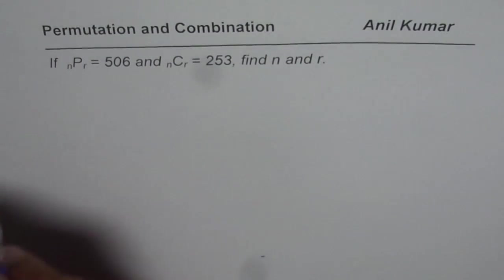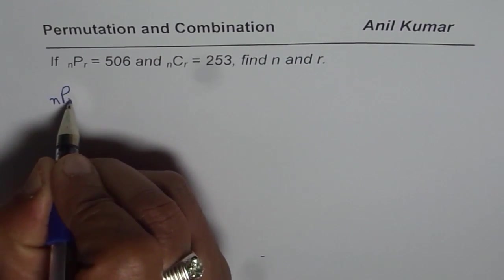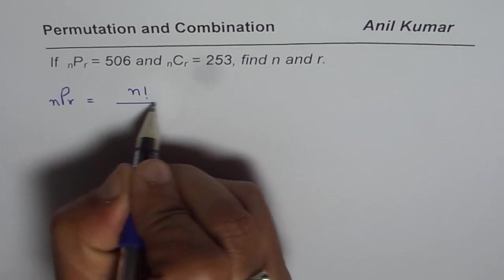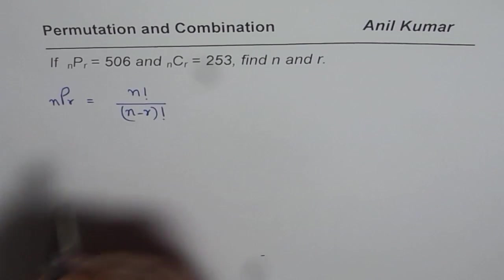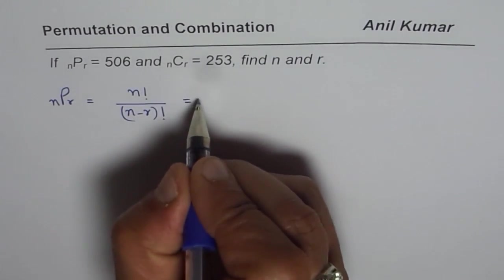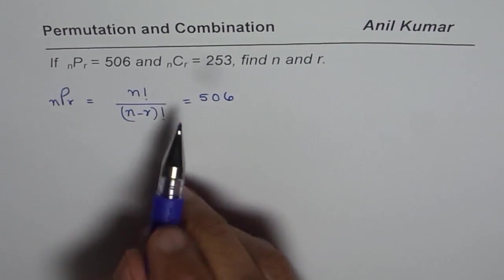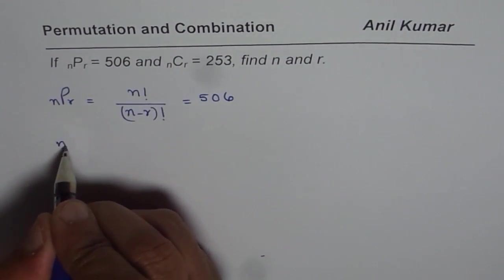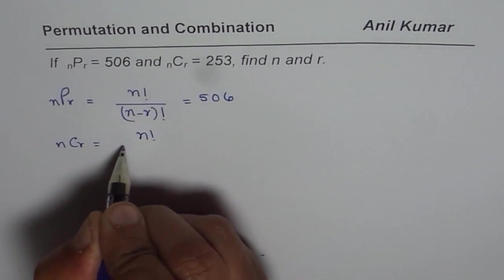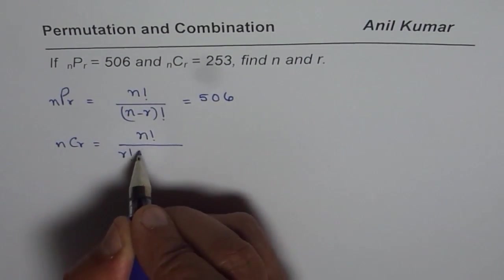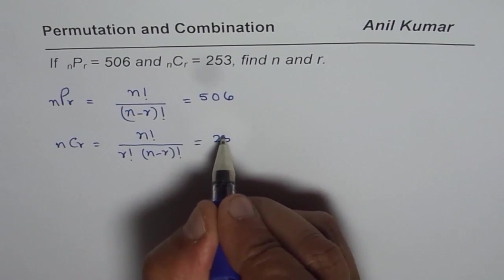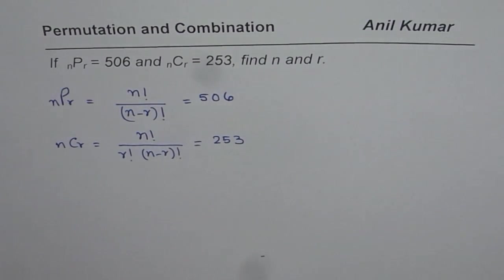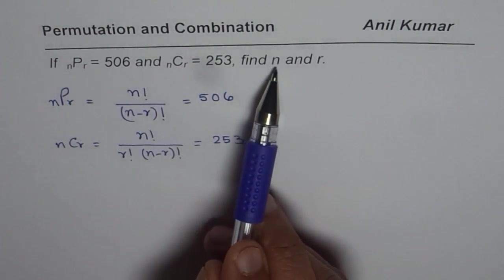nPr equals 506. As you know, nPr is N factorial divided by N minus R factorial, and we are given this nPr as equal to 506. As far as nCr is concerned, nCr is equal to N factorial by R factorial times N minus R factorial, and that is given to us as 253. So this is what is given to us, and from here we need to find what N is and what R is.